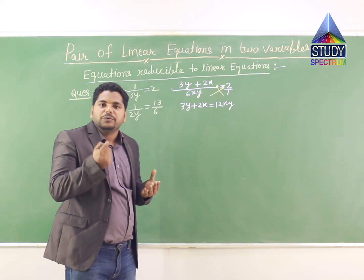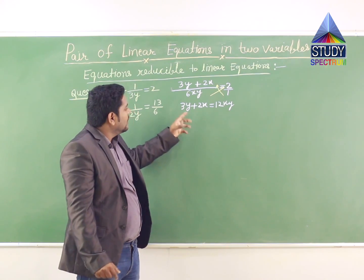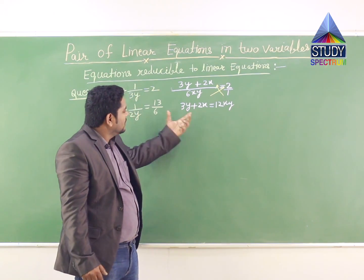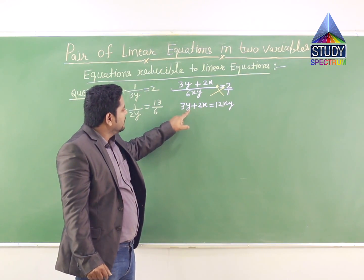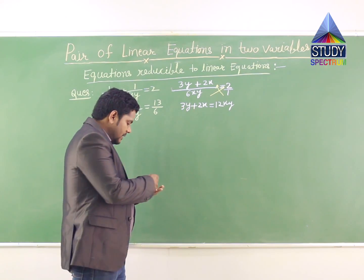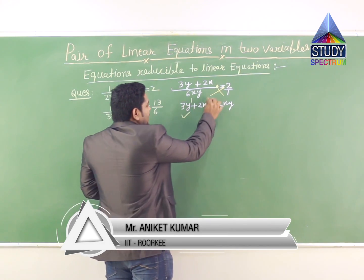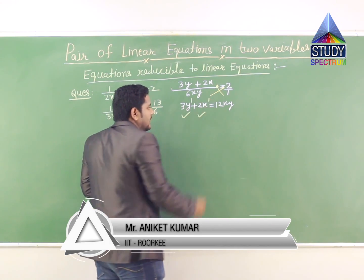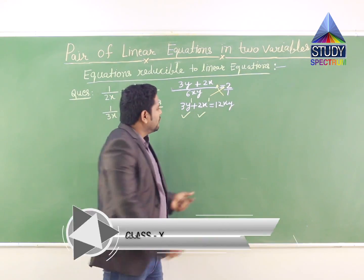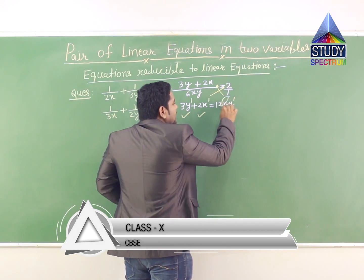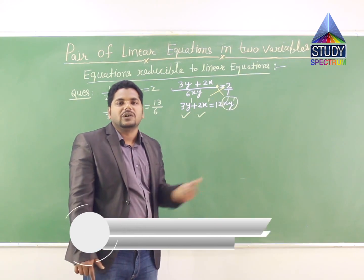Now, if you were asked — this is a linear equation — of course this is not a linear equation. Here, the coefficient of a variable should have power 1. The power of the XY term has 1 here and 1 here, so this term has power 2 — it has index 2. So this is not a linear equation. You cannot apply the methods we have done earlier.